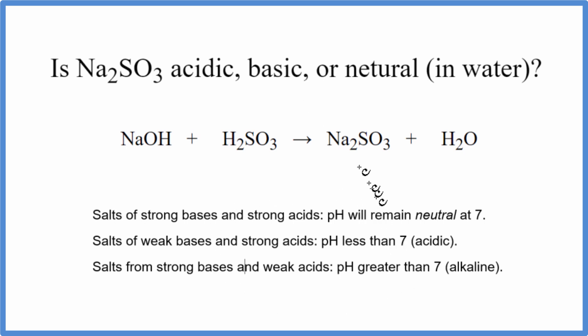So the first thing we need to do is determine what neutralization reaction produced this sodium sulfite. We have sodium hydroxide and sulfurous acid. These two react in a neutralization reaction, then we get our sodium sulfite and water.